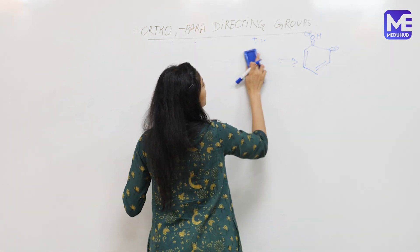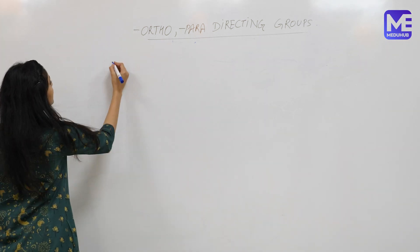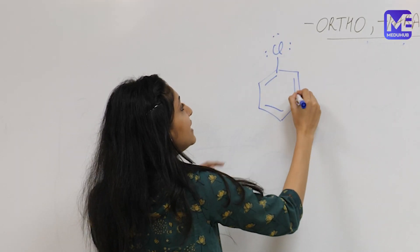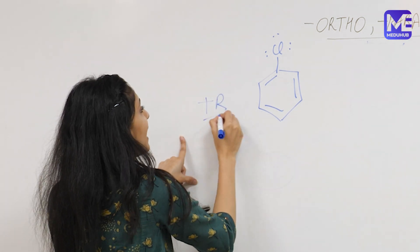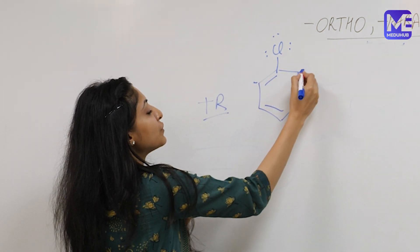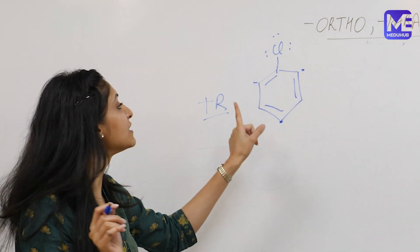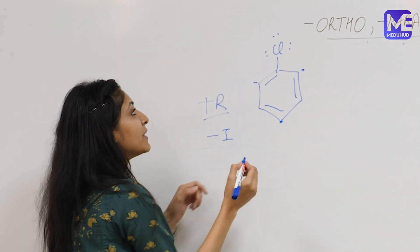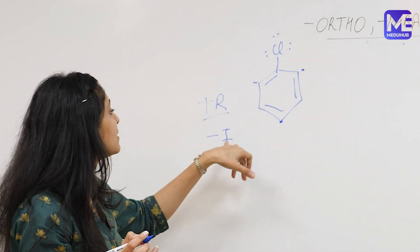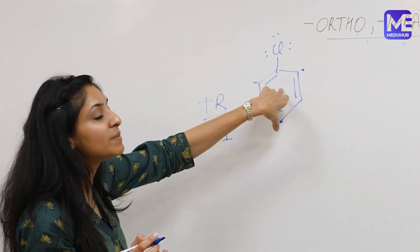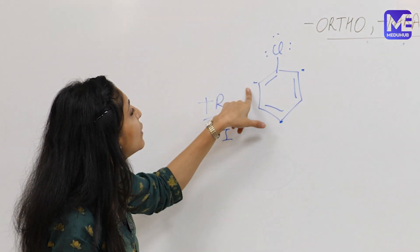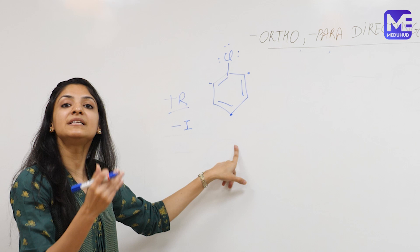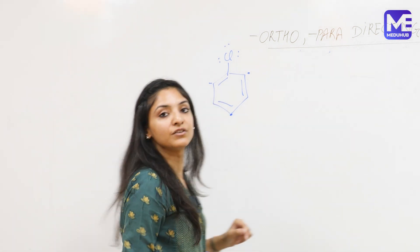Let us take the example of chlorobenzene. Chlorine has three lone pairs of electrons. Just like phenol, these lone pairs engage in a plus R effect and generate negative charges at the two ortho and the one para positions. The resonating structures can be drawn just like for phenol. However, chlorine also has a minus I effect because it is electronegative, pulling electrons away from the benzene ring. So chlorine is ortho/para directing but slightly deactivating towards electrophilic substitution reactions.